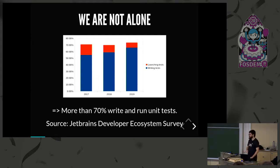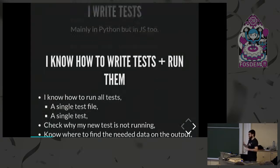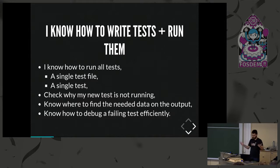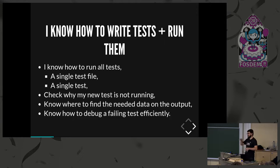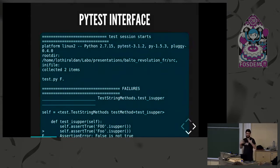A bit of background. I actually do both, because I'm writing Python most of the time, and sometimes JS. When I'm writing code, I'm writing tests, and when I write tests, I run them. With experience, I've learned how to run all my tests, a subset, or a single test; check why a new test is not running; know where to find data in the test runner output; and debug a failing test efficiently using a debugger or print statements. But this knowledge came from years of writing, running, and debugging tests.